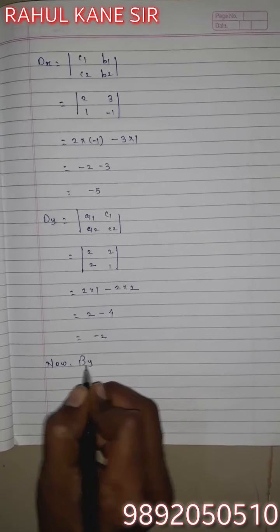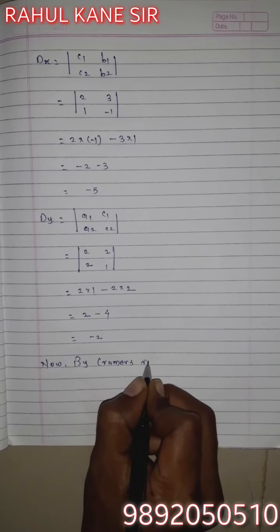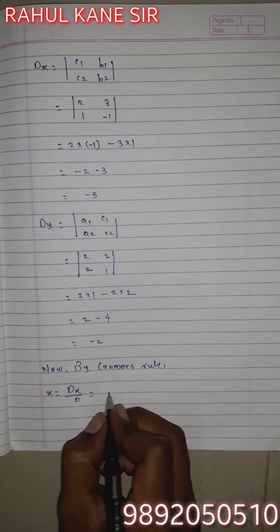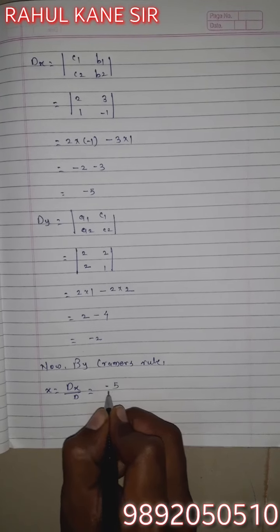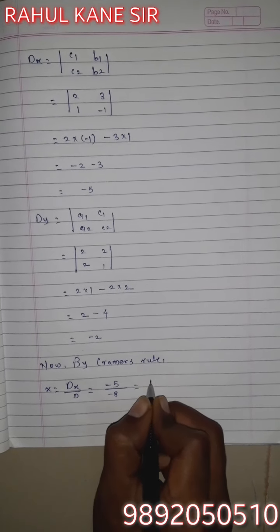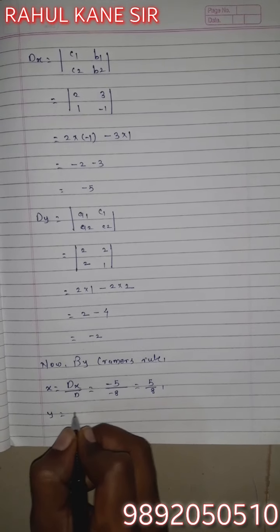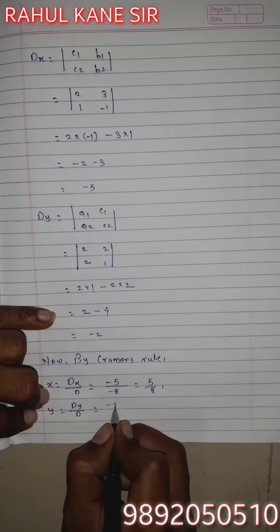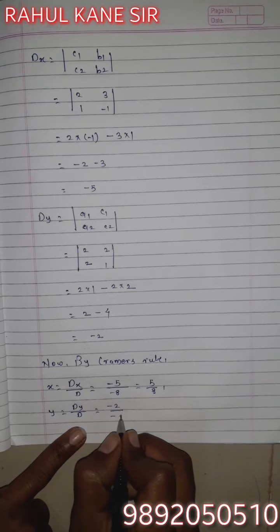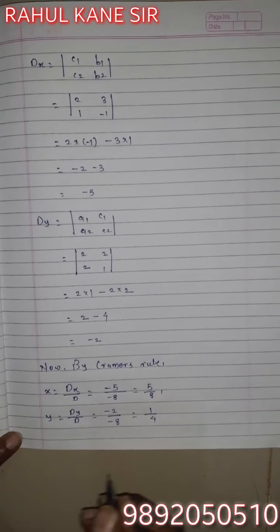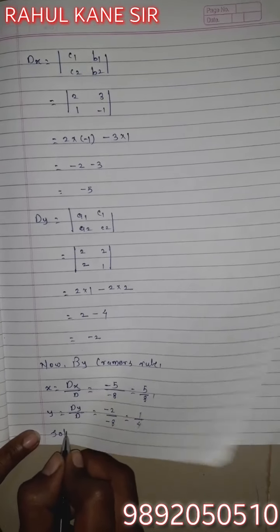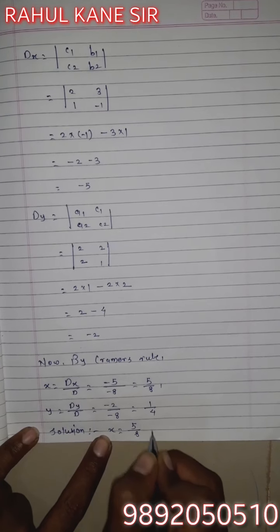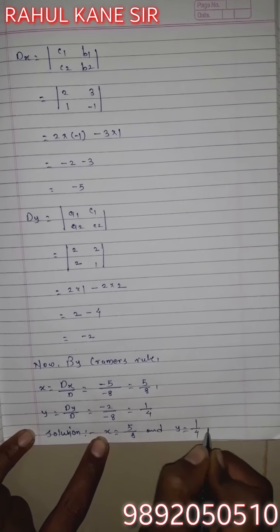By Cramer's rule: x = Dx/D = -5 ÷ -8 = 5/8. Y = Dy/D = -2 ÷ -8, both divisible by 2, equals 1/4. Solution: x = 5/8 and y = 1/4.